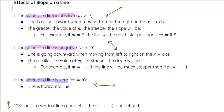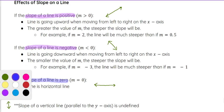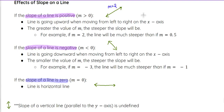If the slope is positive, that line is going upward from left to right. Additionally, the greater the value of m, the steeper the slope will be. For example, if we have a slope of two, then a slope of one half is not going to be as steep — it's going to be closer to a horizontal line.